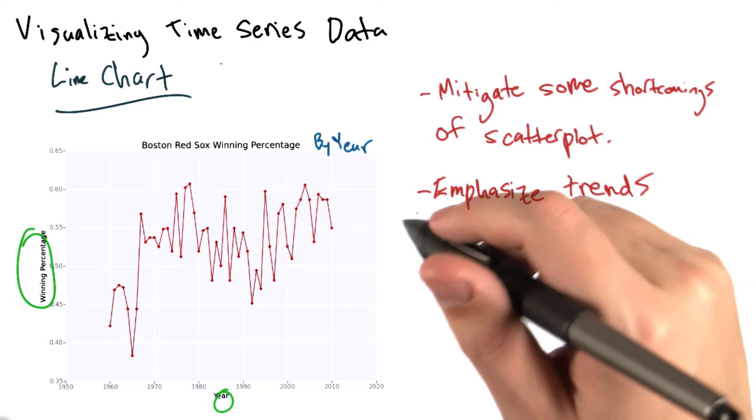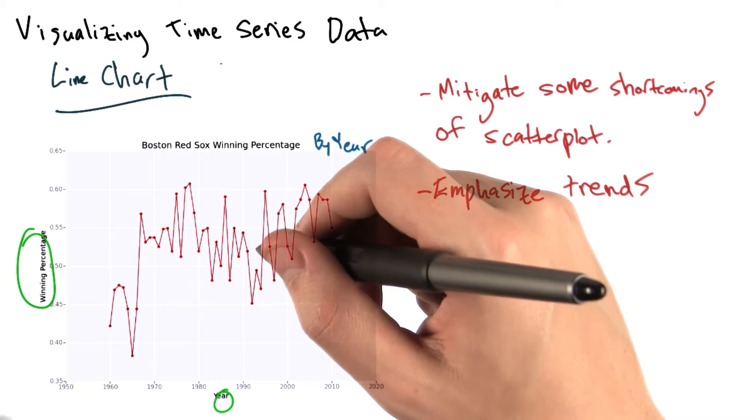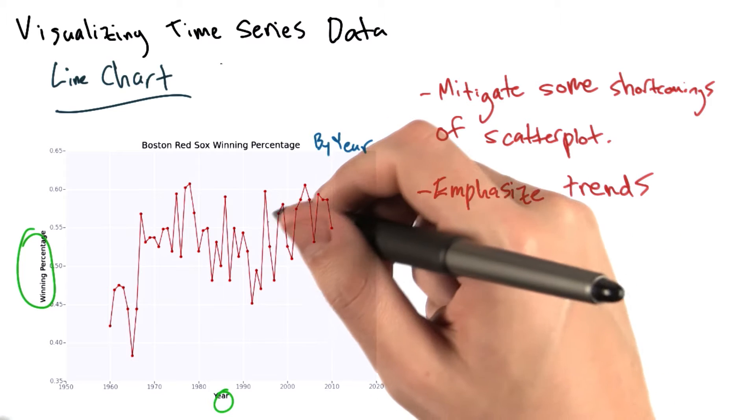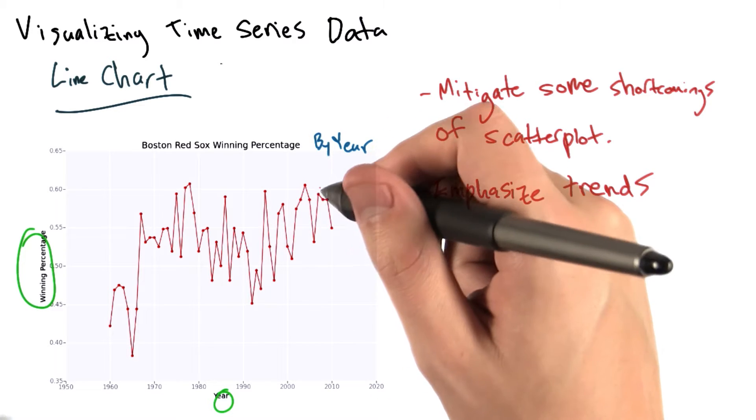Putting lines here really emphasizes trends. So, we can see that there was a pretty bad series of Red Sox teams in the 90s, and that the Red Sox teams have been doing pretty well in the 2000s.